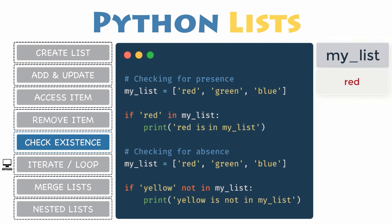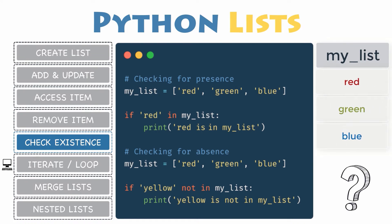Checking items existence. To determine whether a value is or is not in a list, you can use the in and not in operators combined with a statement. For instance, if you want to test whether the item red is in your list, just type if red in my list — this will return the boolean value true if the statement is valid, or false when the item yellow is not in your list.